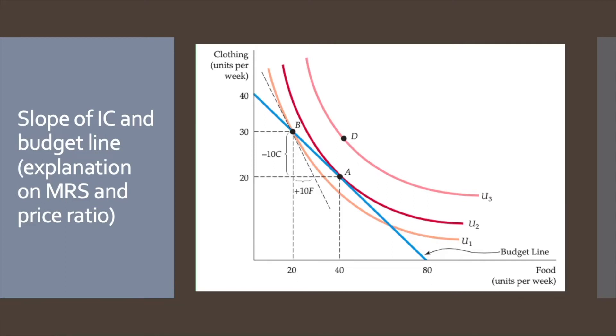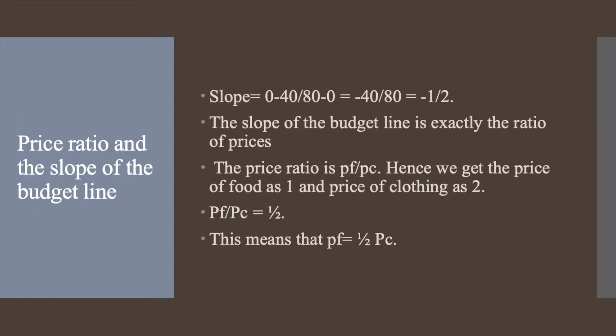Let's calculate the slope of the budget line. The x-coordinate is (0, 40) and the y-coordinate is (80, 0). The slope equals delta y divided by delta x, giving us (0 − 40) / (80 − 0) = −40/80 = −1/2. This is exactly equal to the price ratio pF/pC, giving us the price of food as 1 and the price of clothing as 2. The slope of the budget line is exactly equal to the ratio of prices.